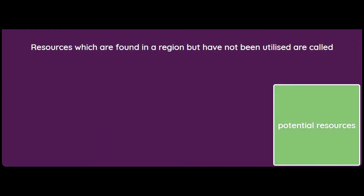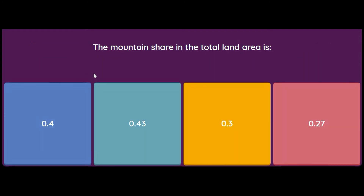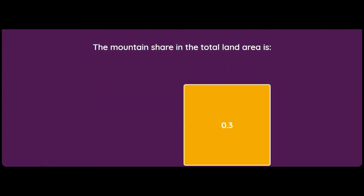The mountain share in the total land area is what percentage: 40%, 43%, or 30%? The answer is 30 percent. The total plains land area is 43 percent.